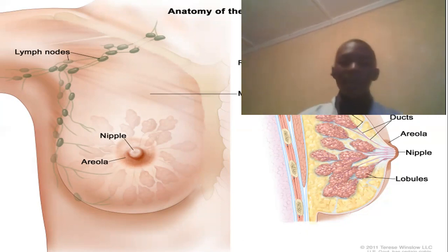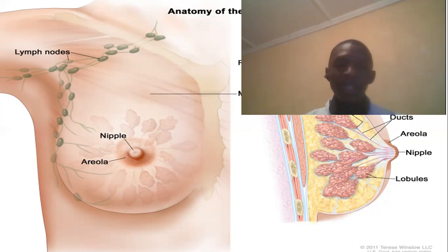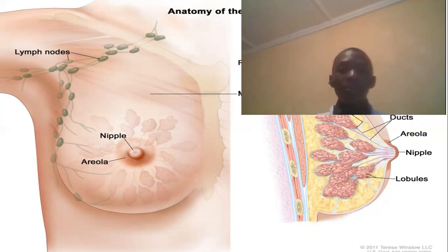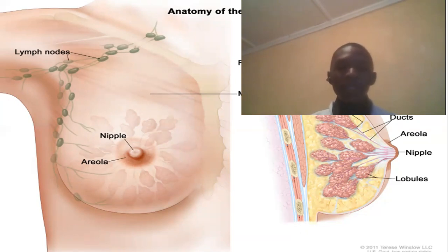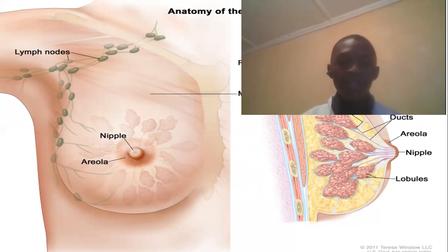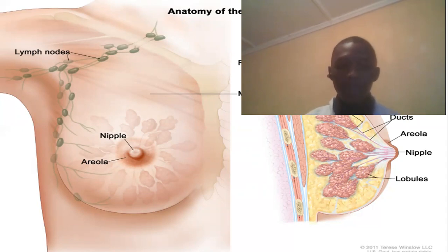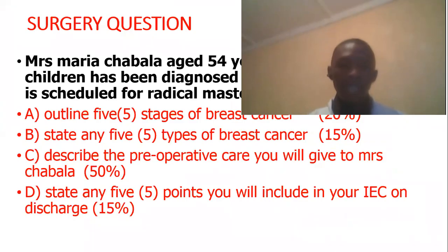The fifth type is modified radical mastectomy. The surgeon removes the entire breast, axillary lymph nodes, and the lining that covers the chest muscles. If the lymph nodes contain cancer cells, radiotherapy and chemotherapy follow after the surgery.